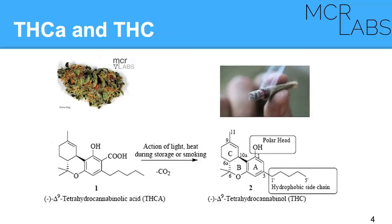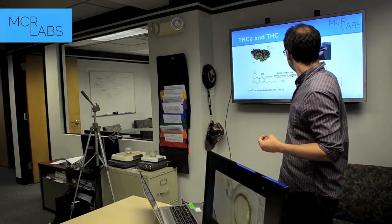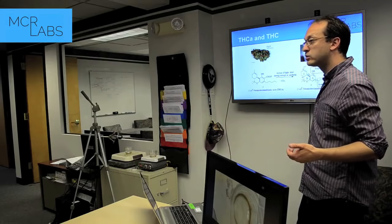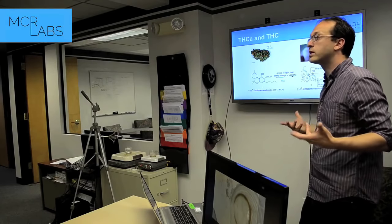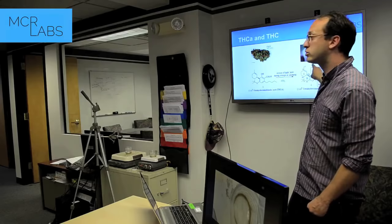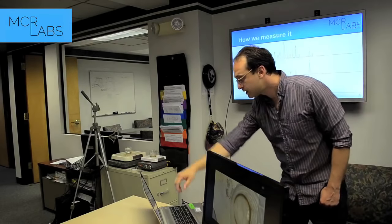Anytime you put a complicated molecule into the presence of heat, it's going to react and potentially produce something else. THC with heat gives you CBN, but not just CBN — it actually gives you a whole bunch of other things. It does start breaking apart under heat. So when you are decarboxylating THCA into THC, you want to be very careful because if you apply too much heat, you are destroying your THC molecule and making other things such as CBN.